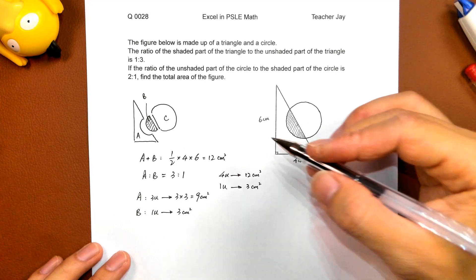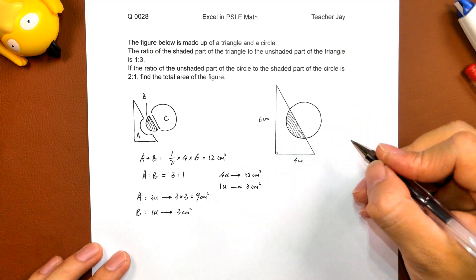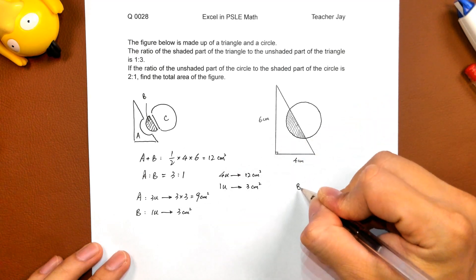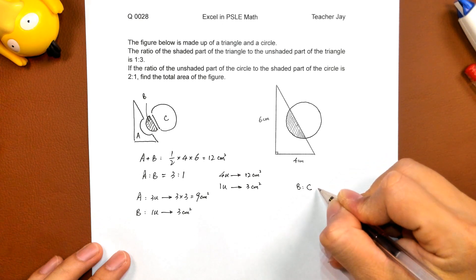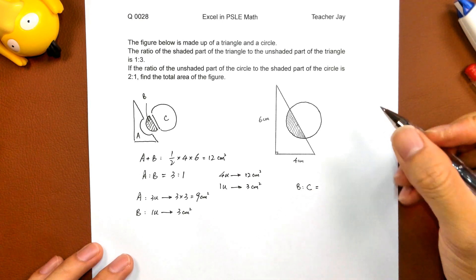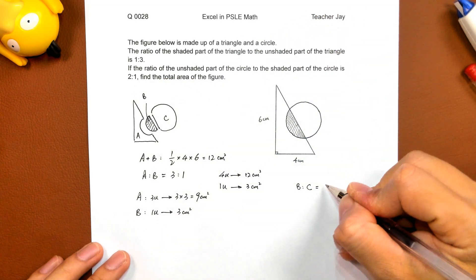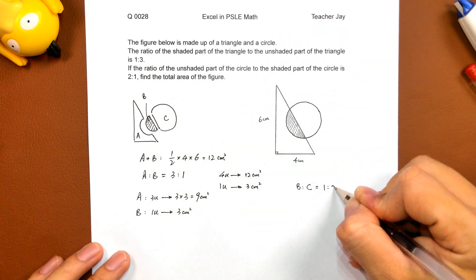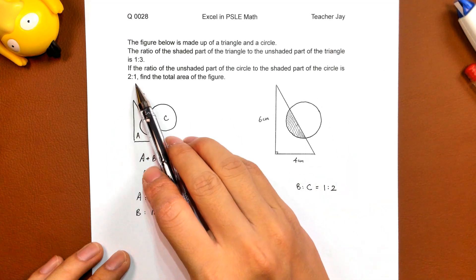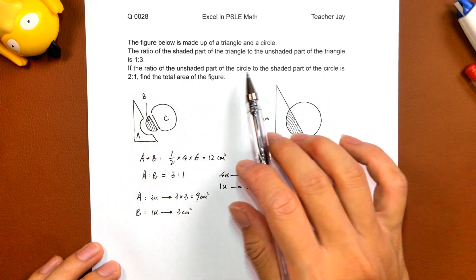And next, B to C, the shaded part of the circle to the unshaded part of the circle. From the question 1 to 2. It's not 2 to 1, because we need to convert it.